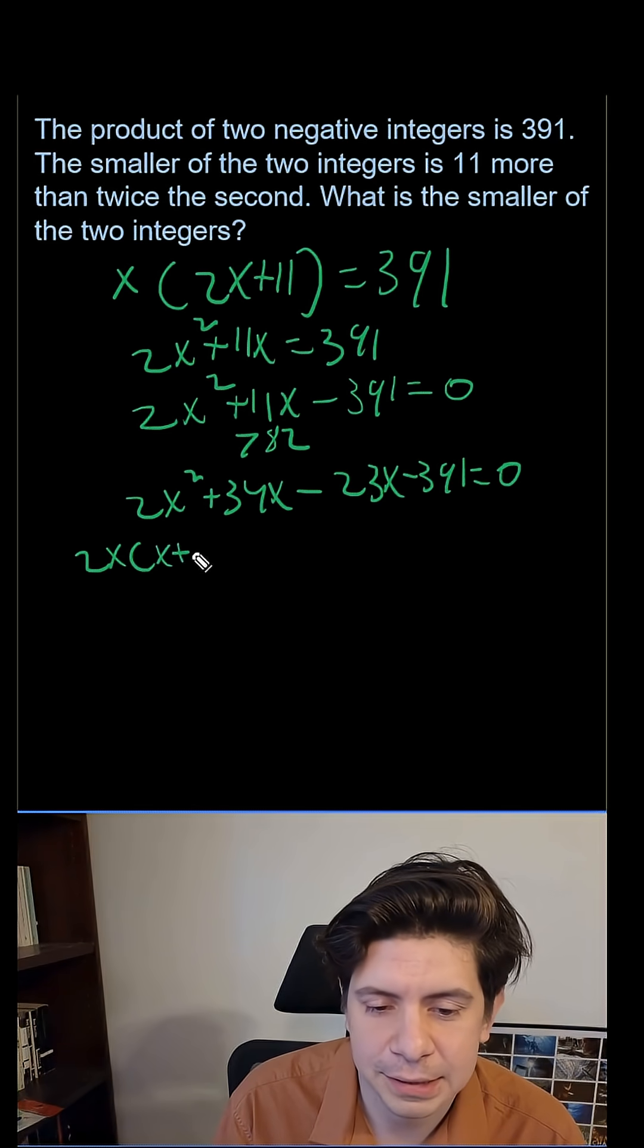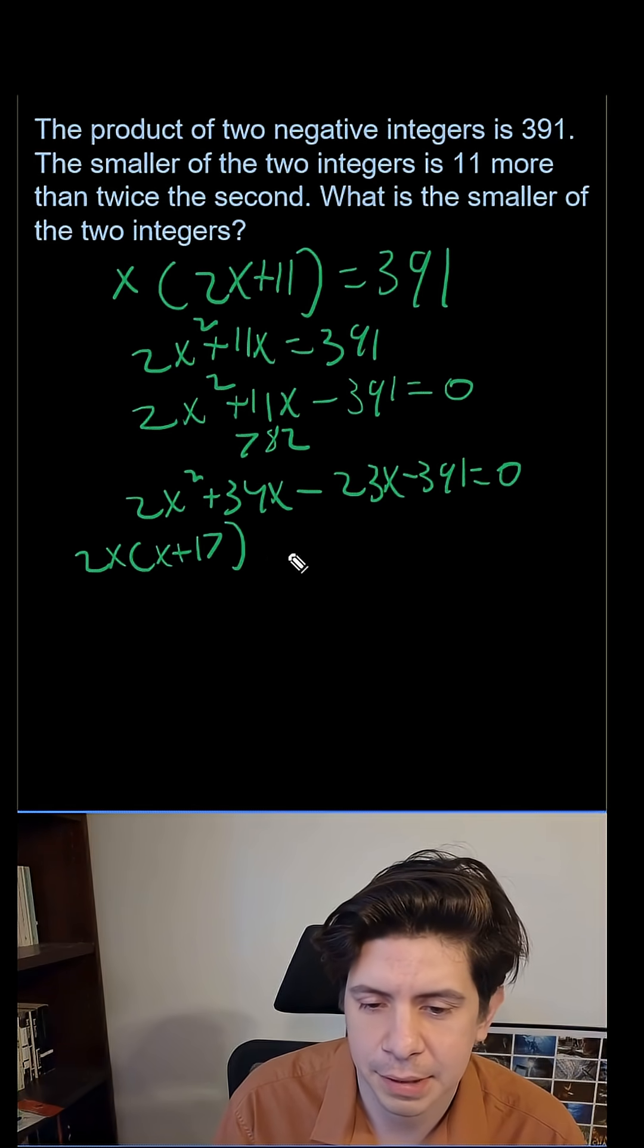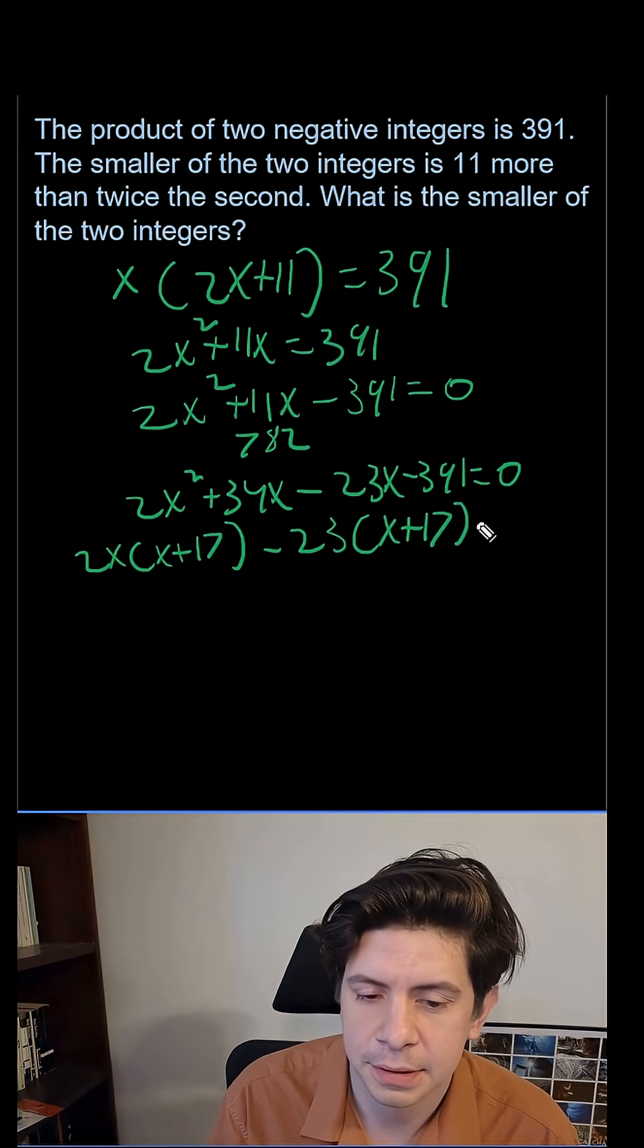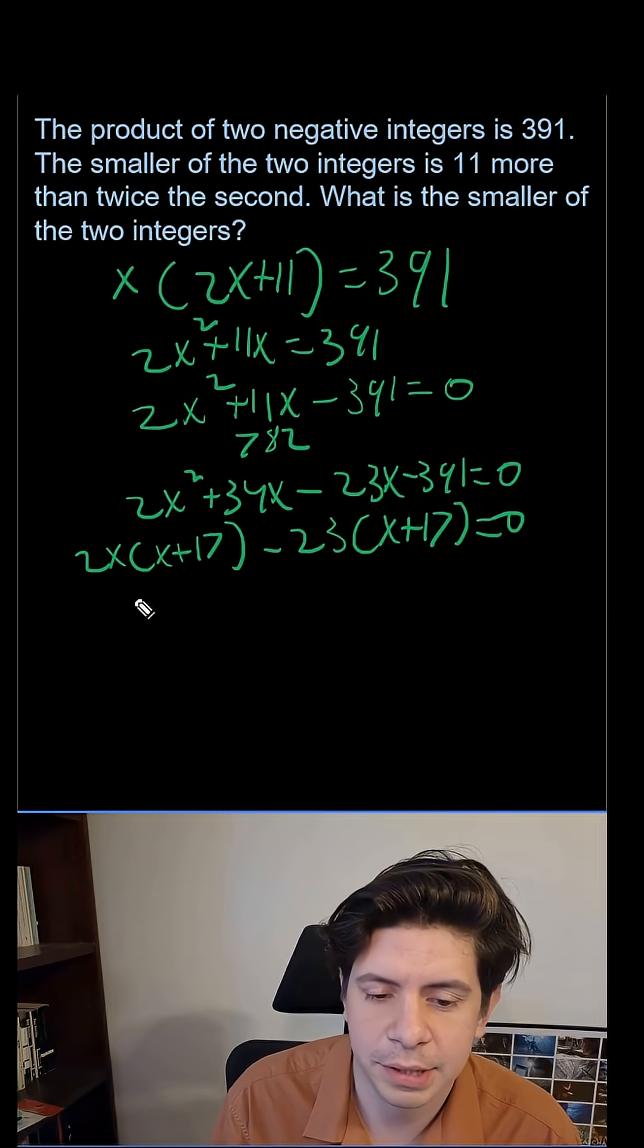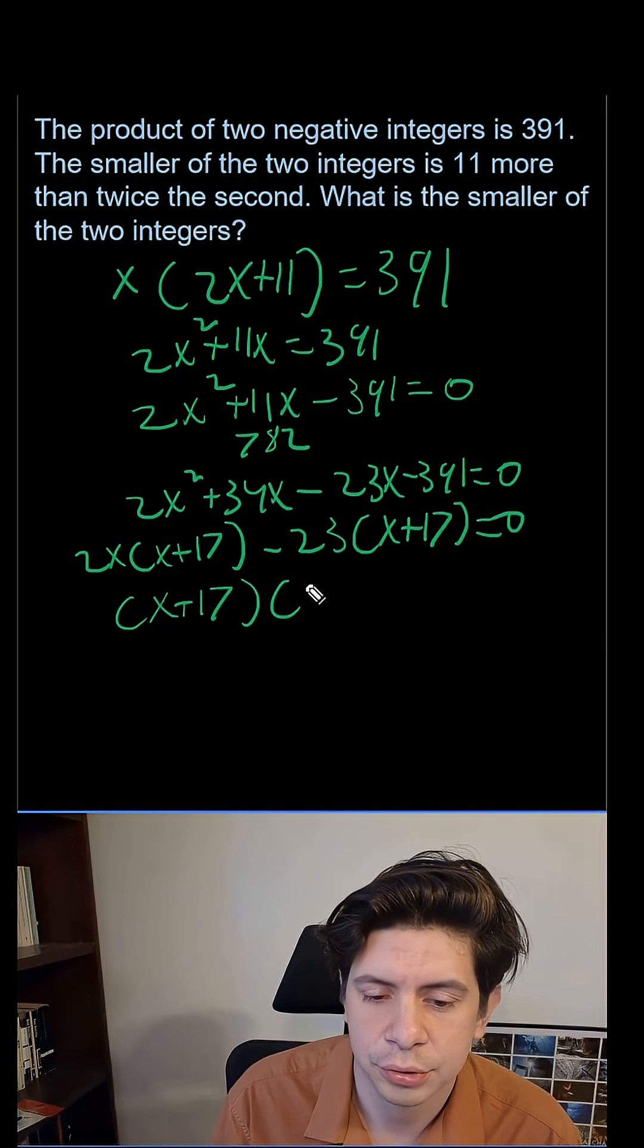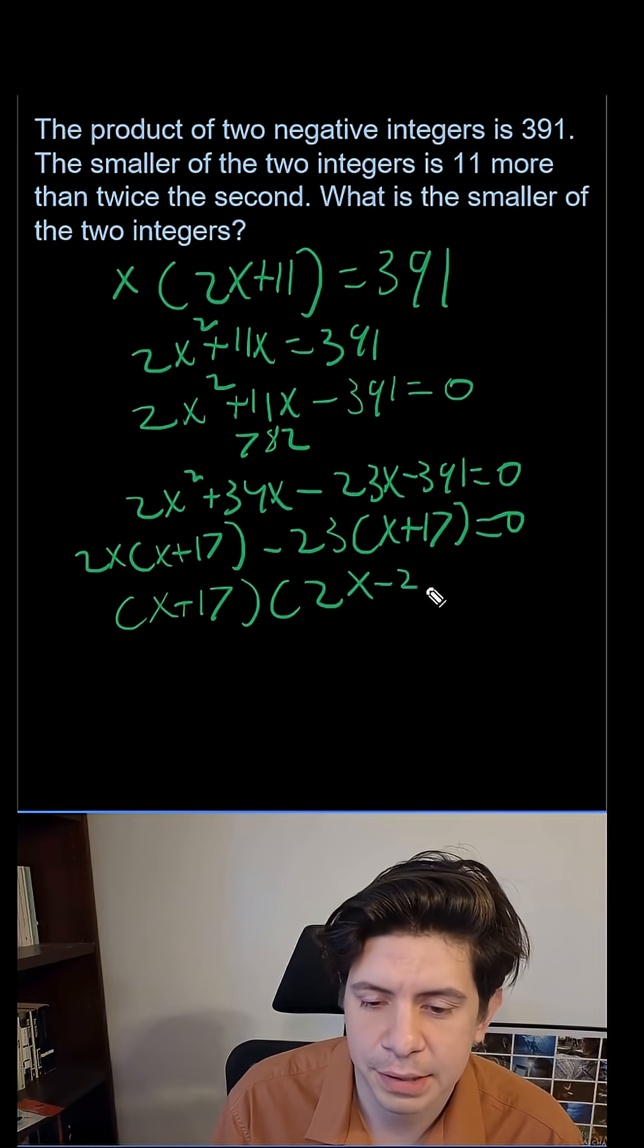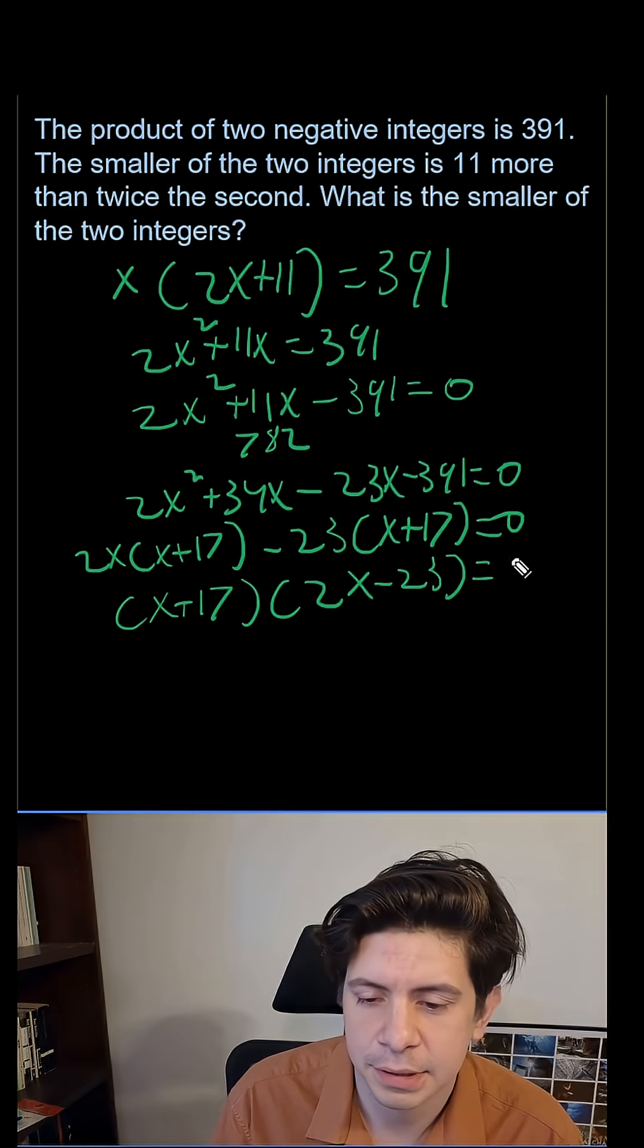x plus 17 minus 23x plus 17 equals zero. And we get x plus 17, 2x minus 23 equals zero.